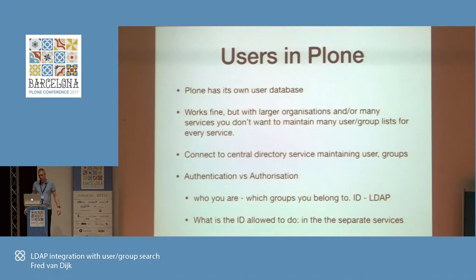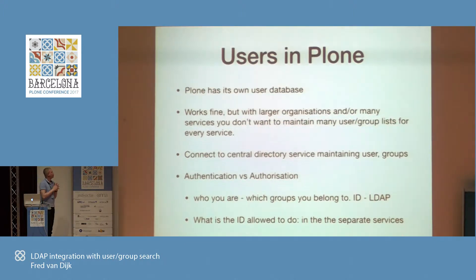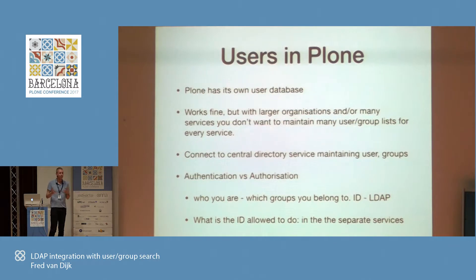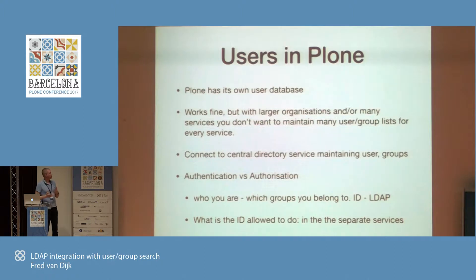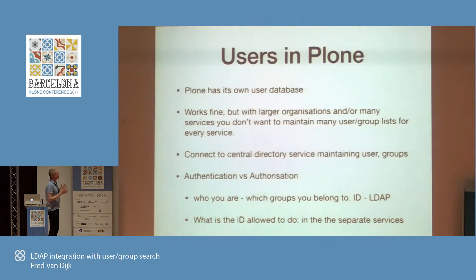When we go to Plone — Plone has its own user database, you can just store users and groups in it. But with larger organizations, you might want to connect to a central directory. The central directory is mostly used for authentication. Authentication is who you are — you verify a user with a password. Authorization is what permissions you have on a service. Mostly, authentication is done in the directory and authorization is done on the services themselves.